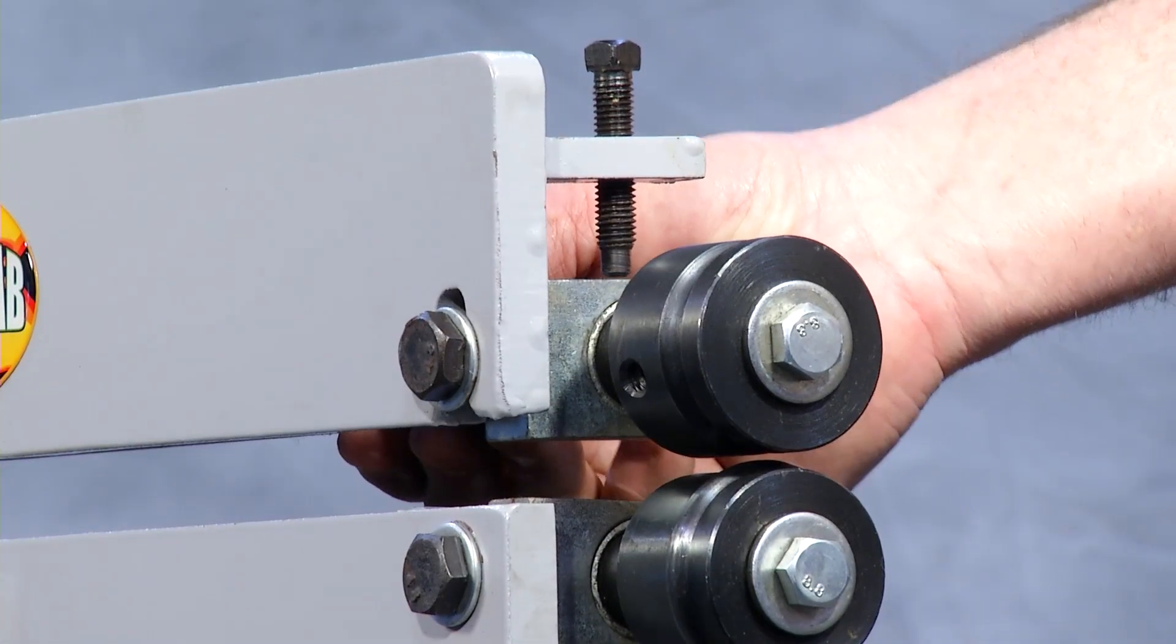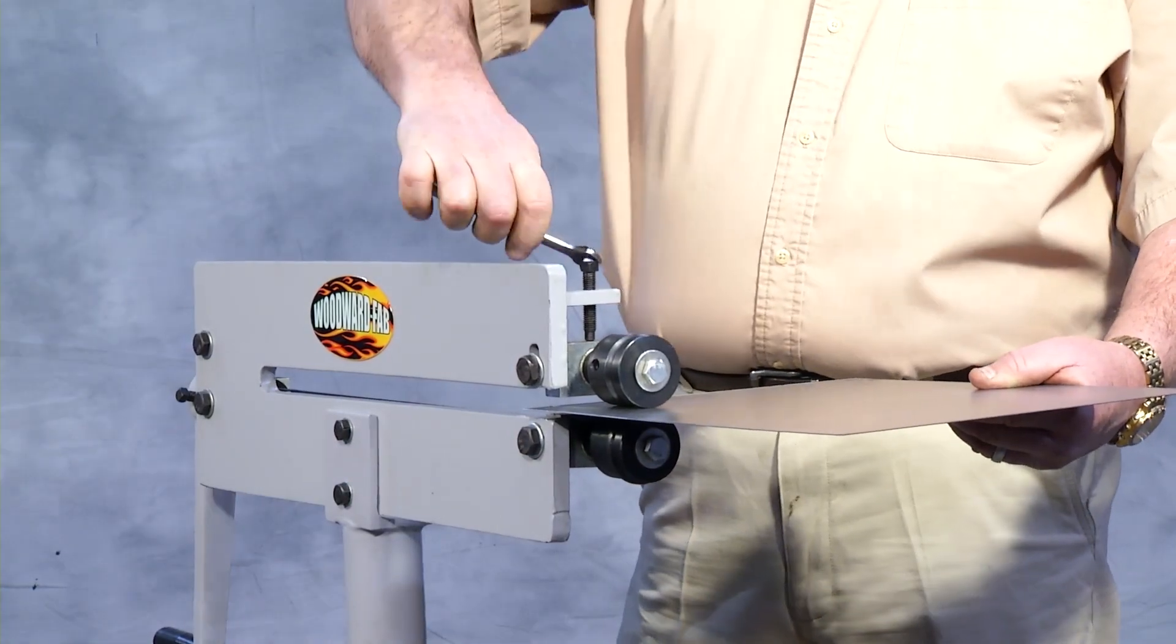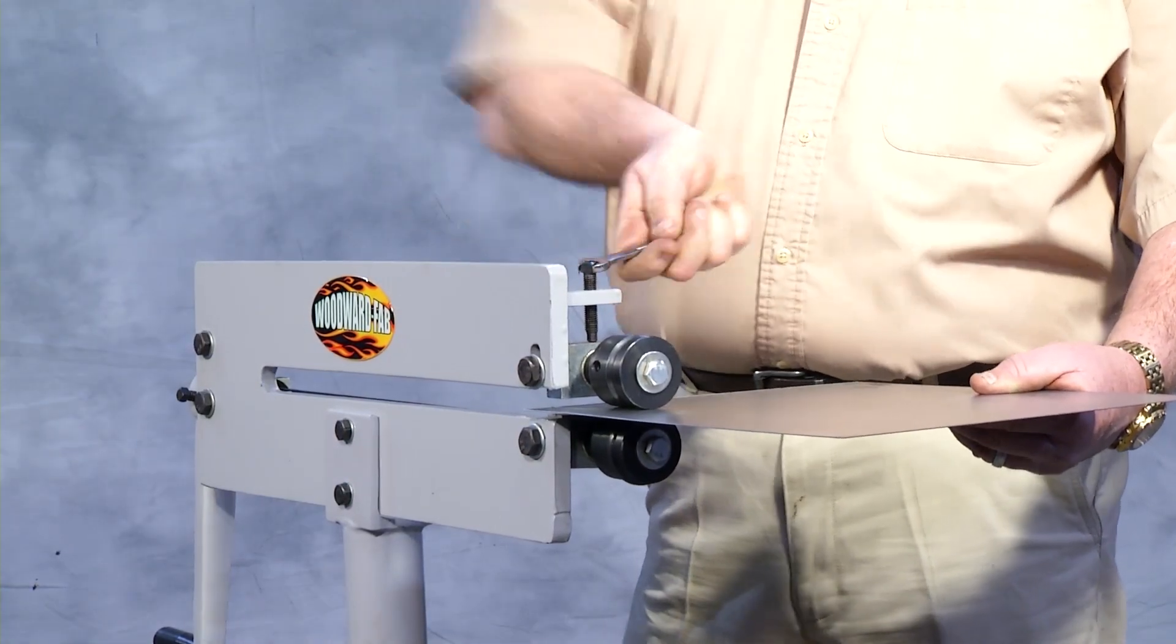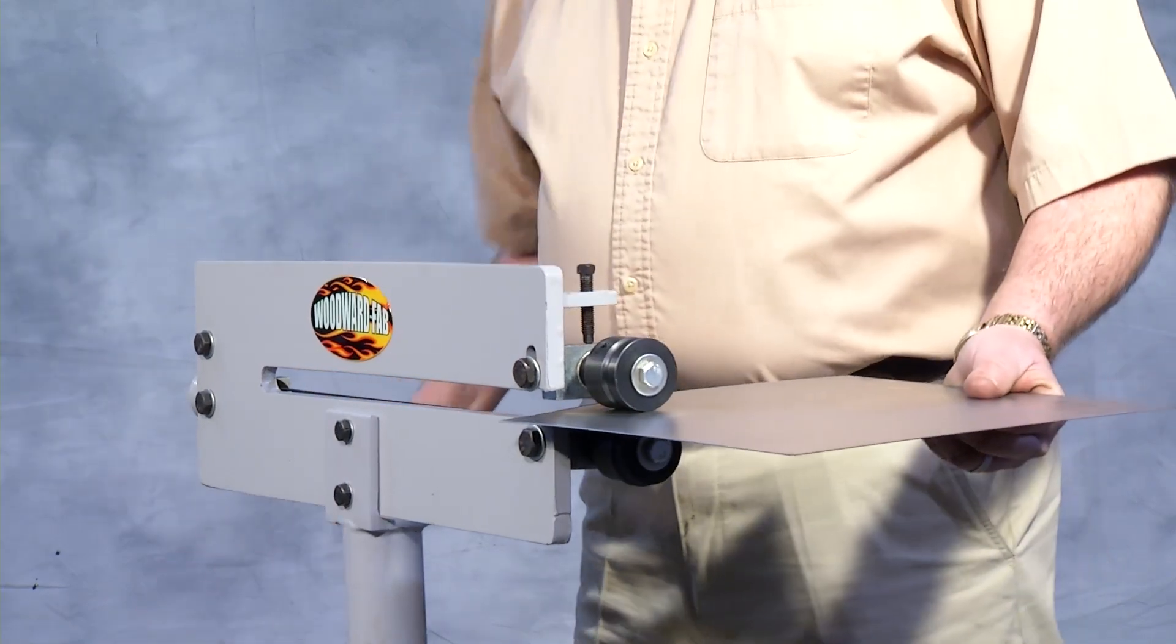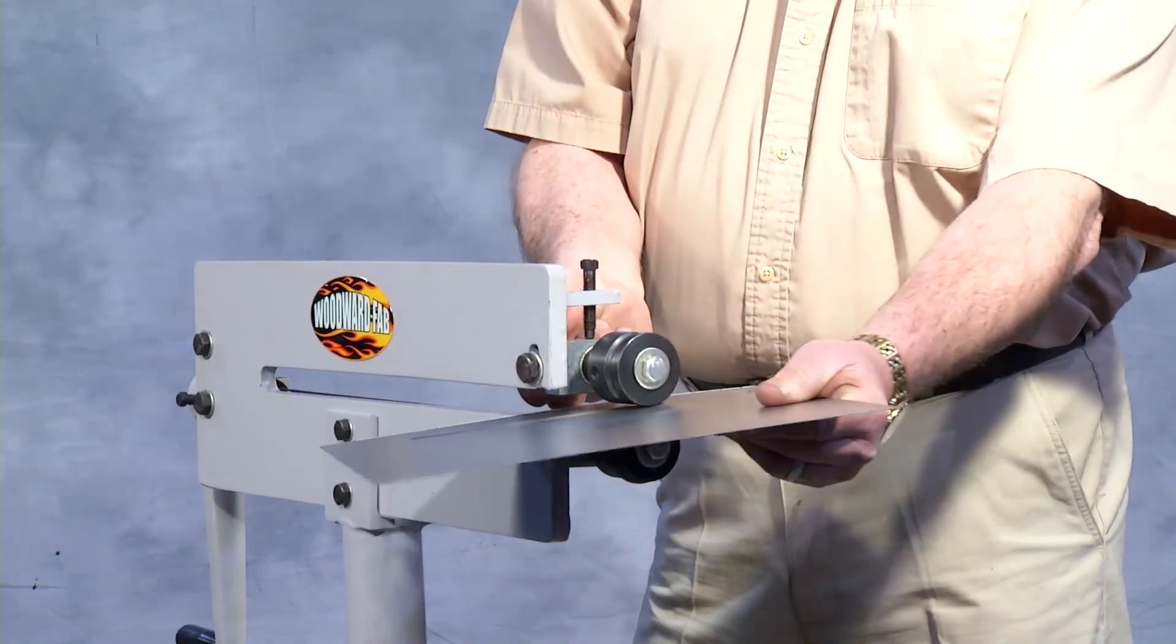Once the die size has been determined, you will place the steel between the two dies and adjust the pressure screw to set bead depth. A bead can be started from the edge or from the center of a piece.